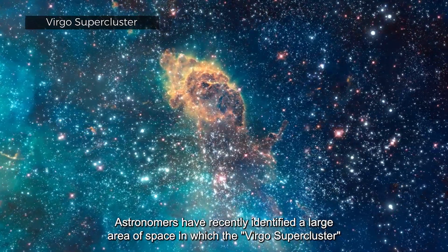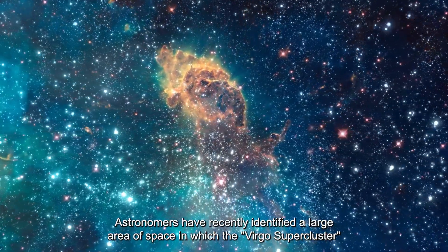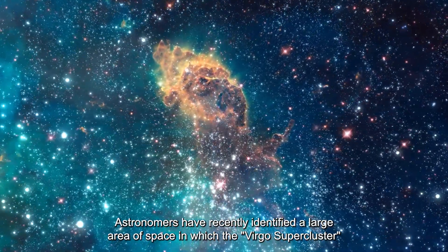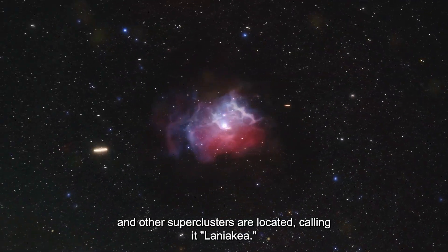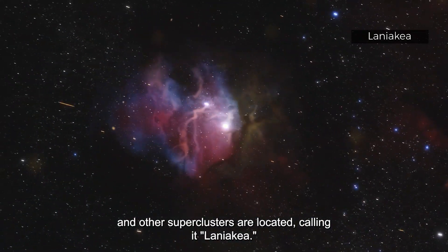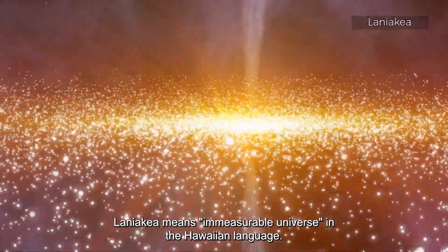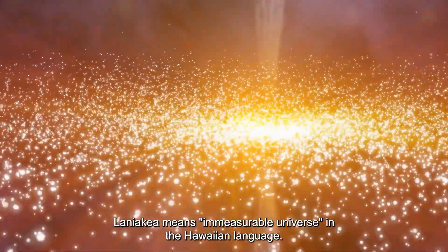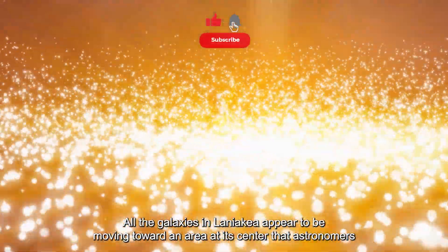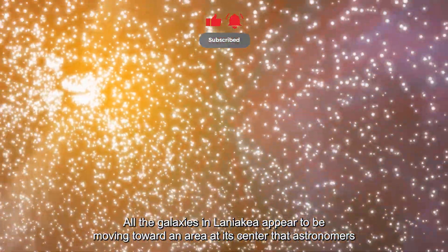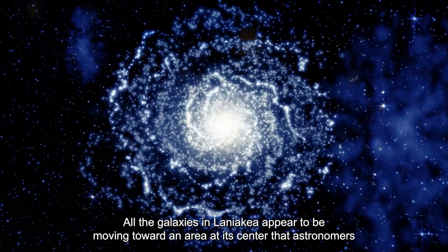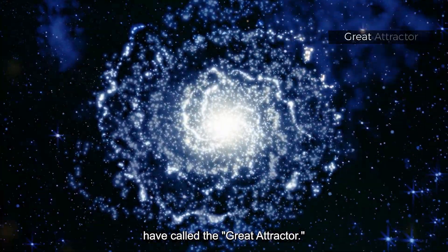Astronomers have recently identified a large area of space in which the Virgo Supercluster and other superclusters are located, calling it Laniakeia. Laniakeia means immeasurable universe in the Hawaiian language. All the galaxies in Laniakeia appear to be moving toward an area at its center that astronomers have called the great attractor.